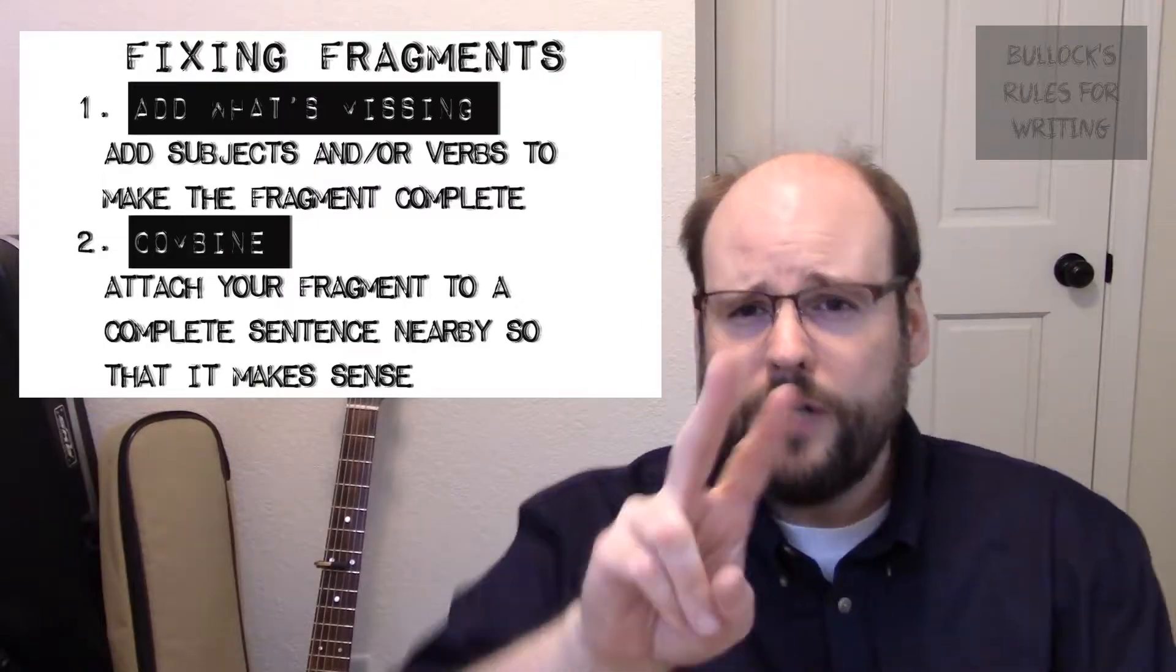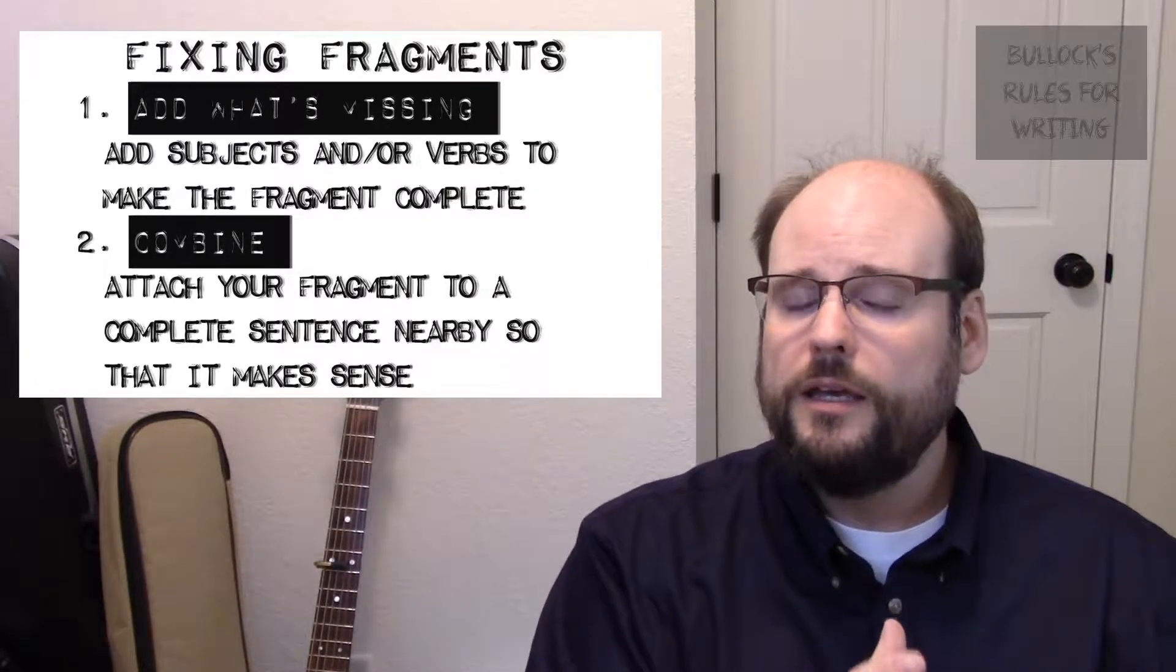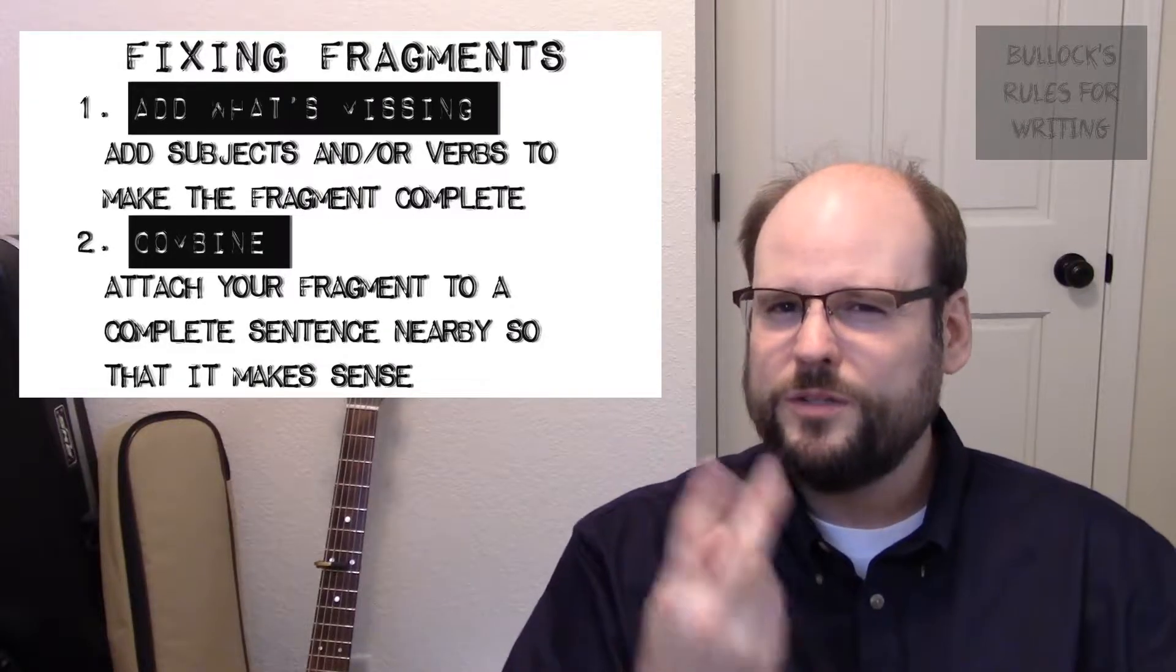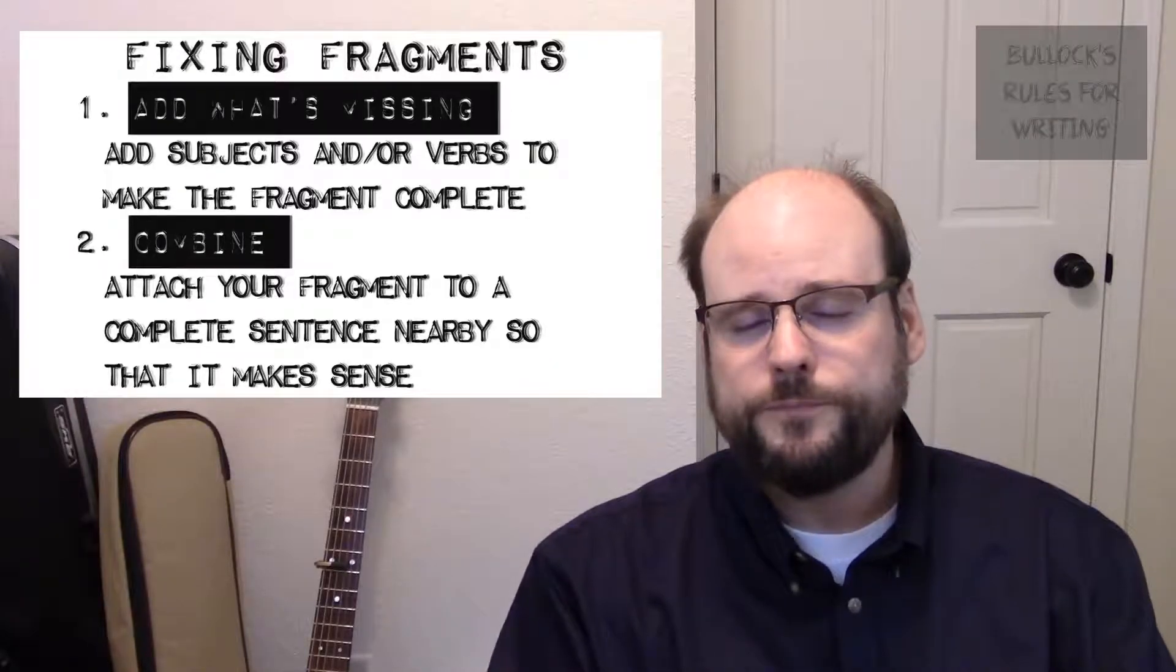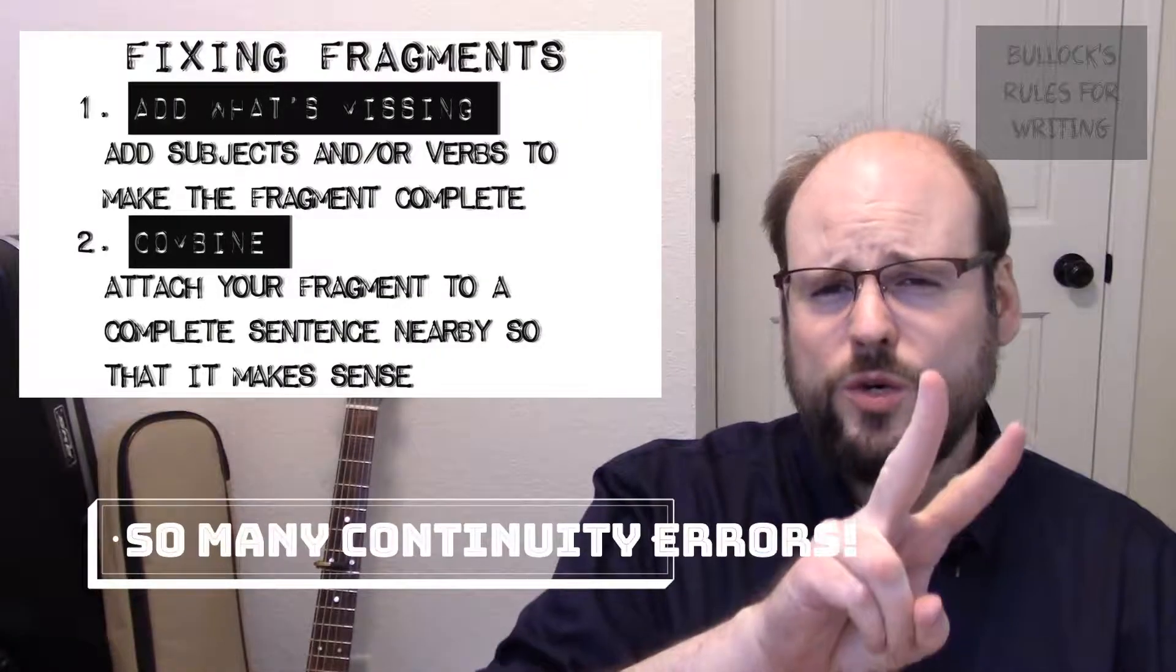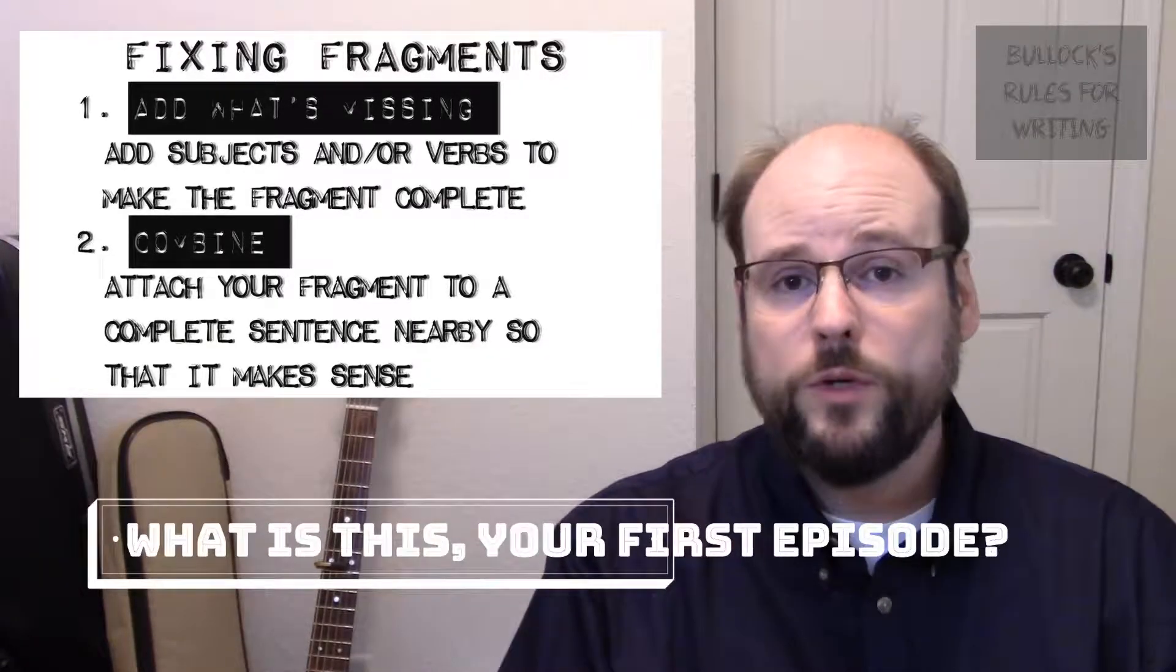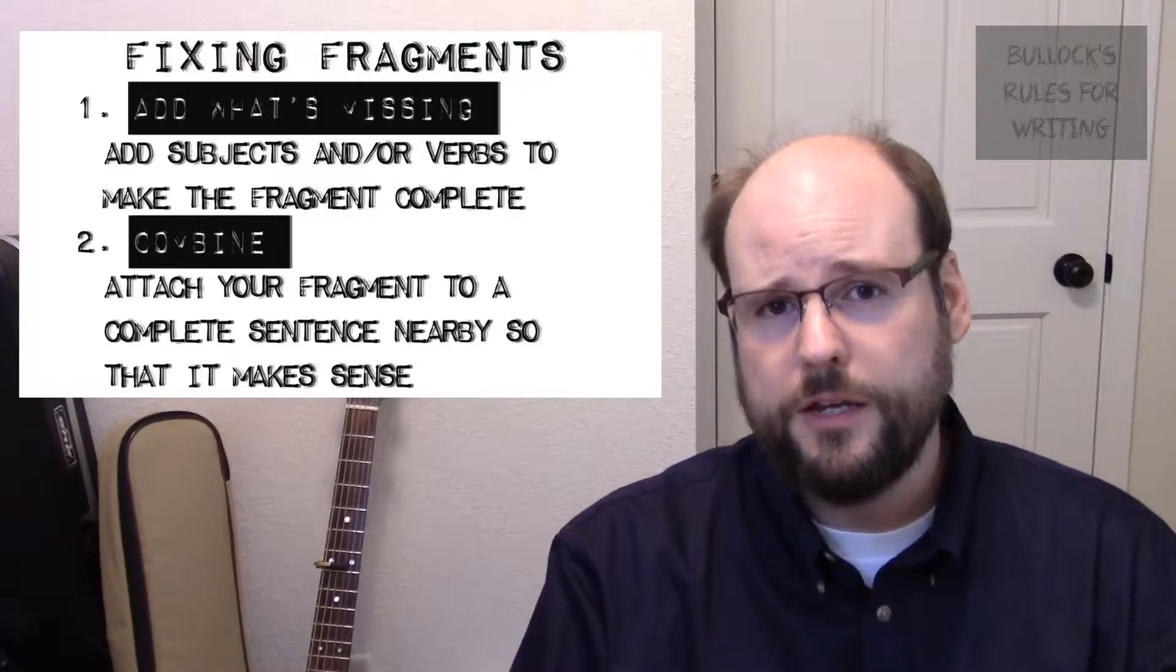The other option, option number two, is that you can combine your fragment with a complete sentence nearby. Now this isn't always going to work. It'd be hard to do with two words like the mall, but it's actually really easy to do with one of the fragments we saw earlier. Because I studied for the biology quiz today, I got an A. So there you go. That's two ways that you can fix a fragment. You can put in what's missing. You can attach that fragment to a complete thought somewhere else nearby.